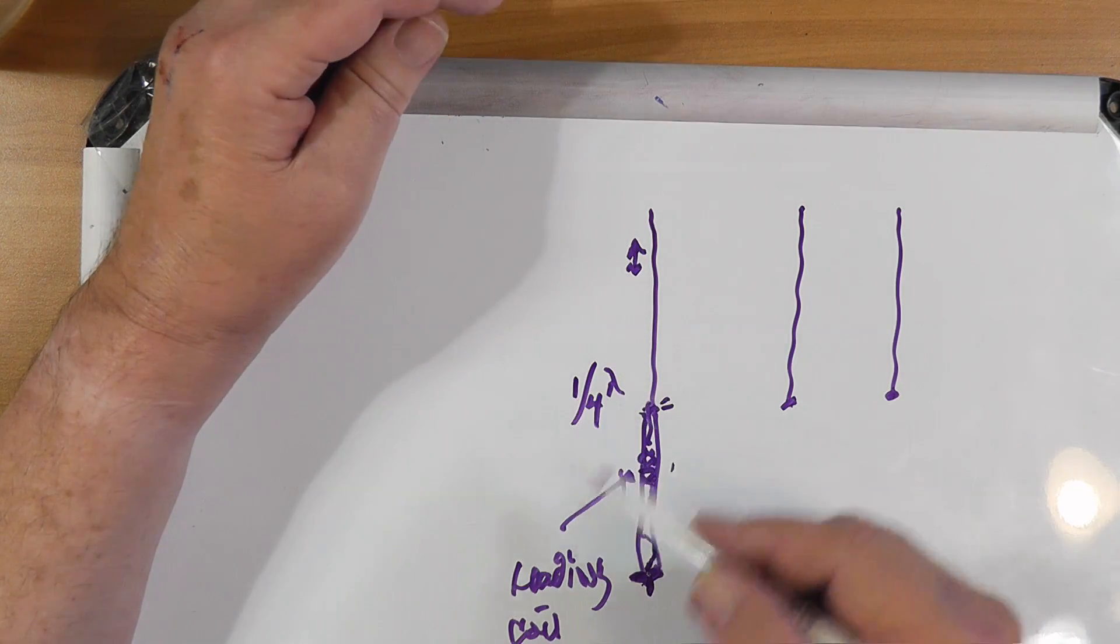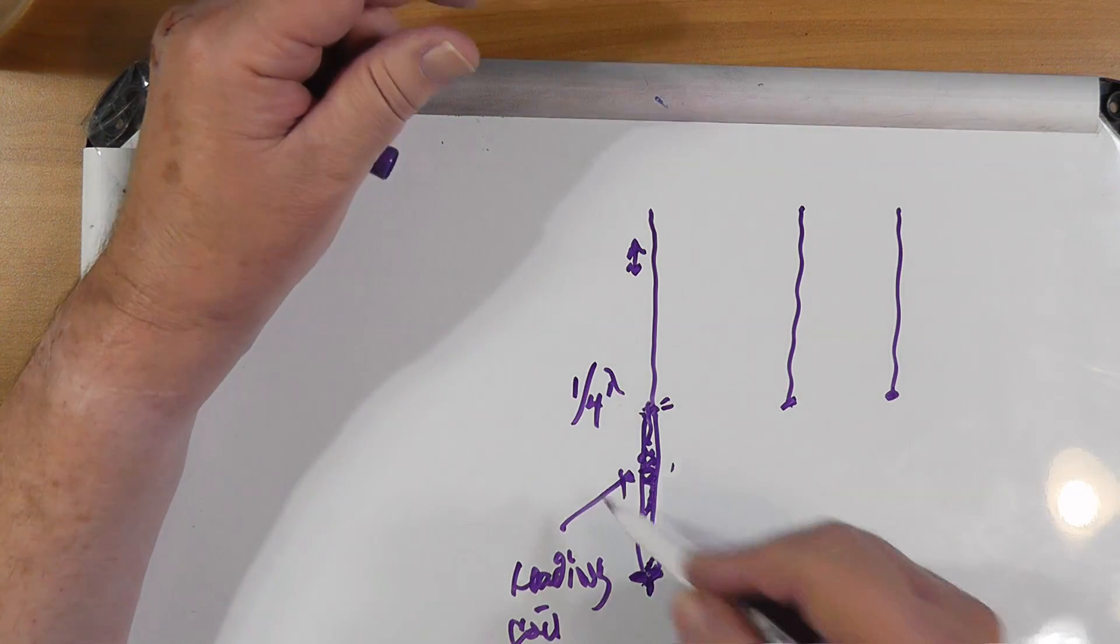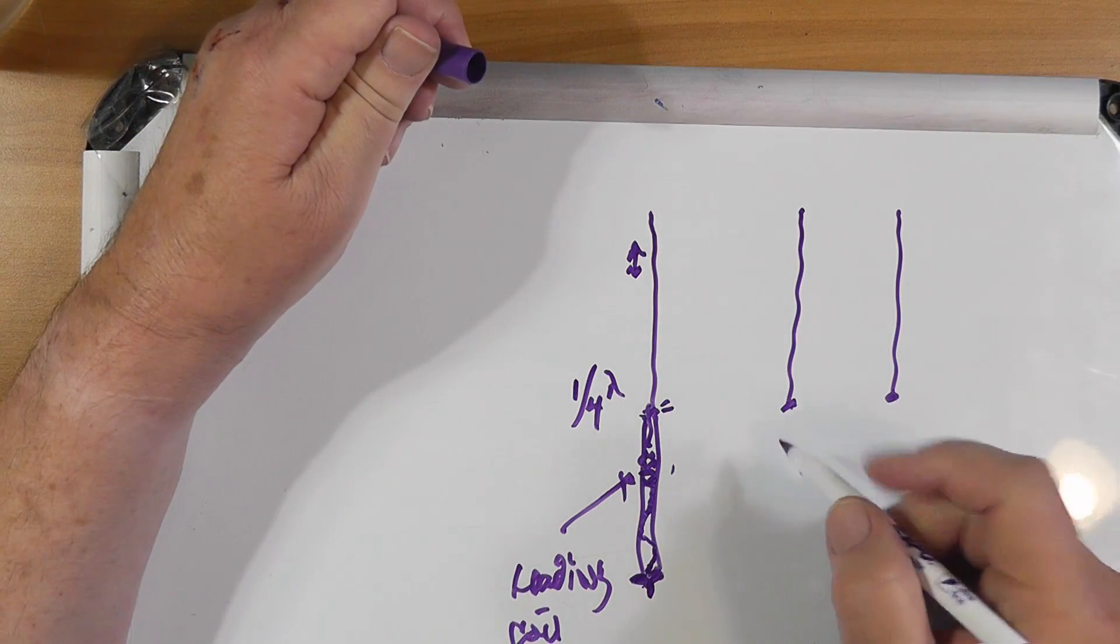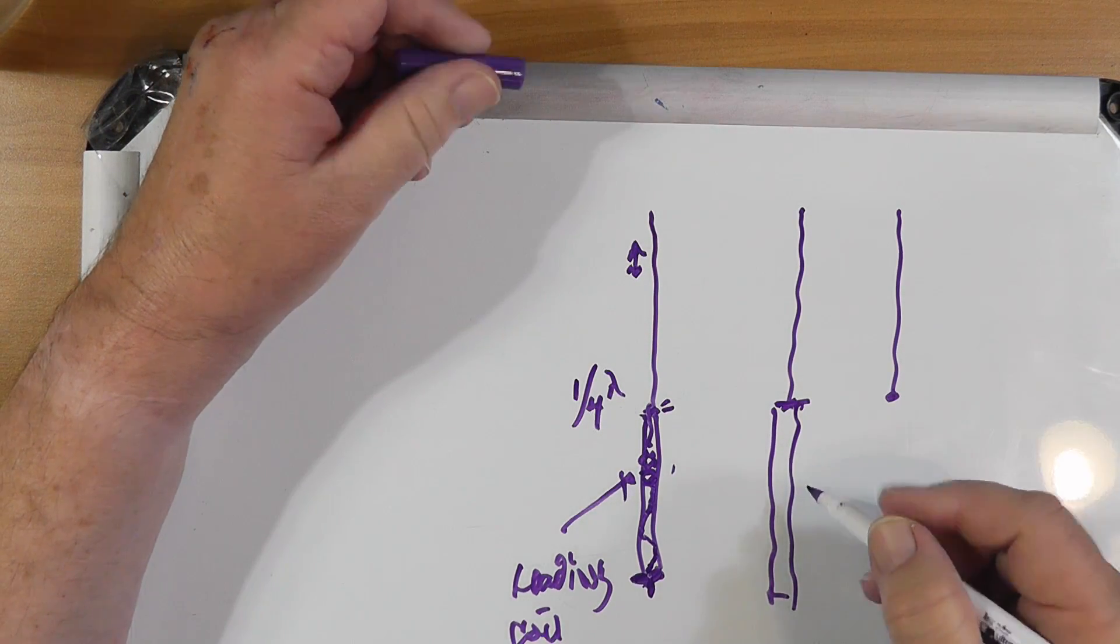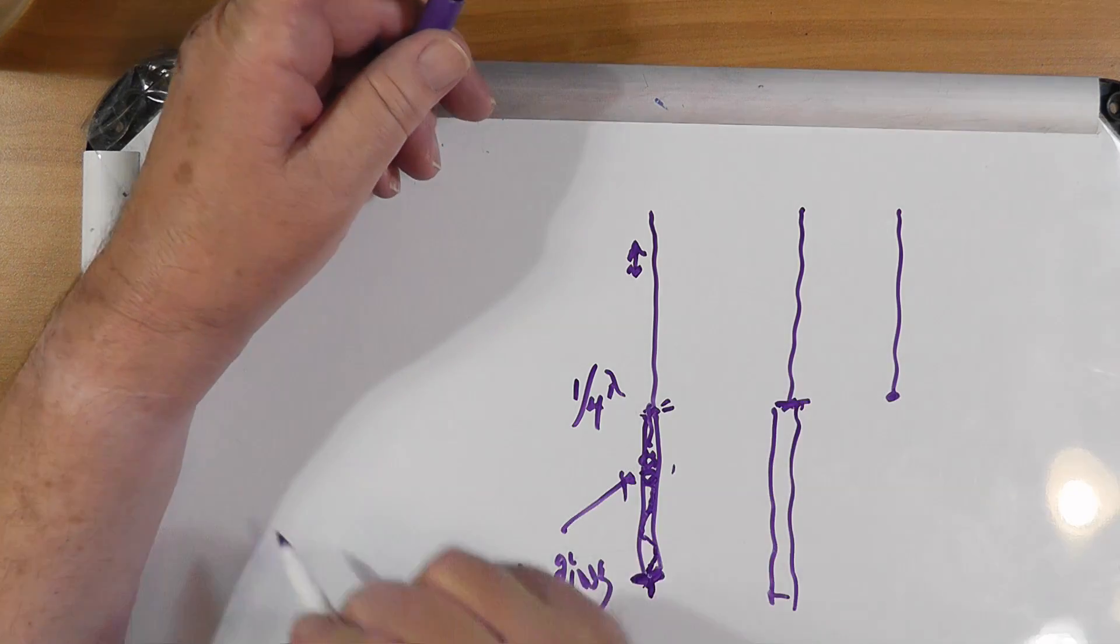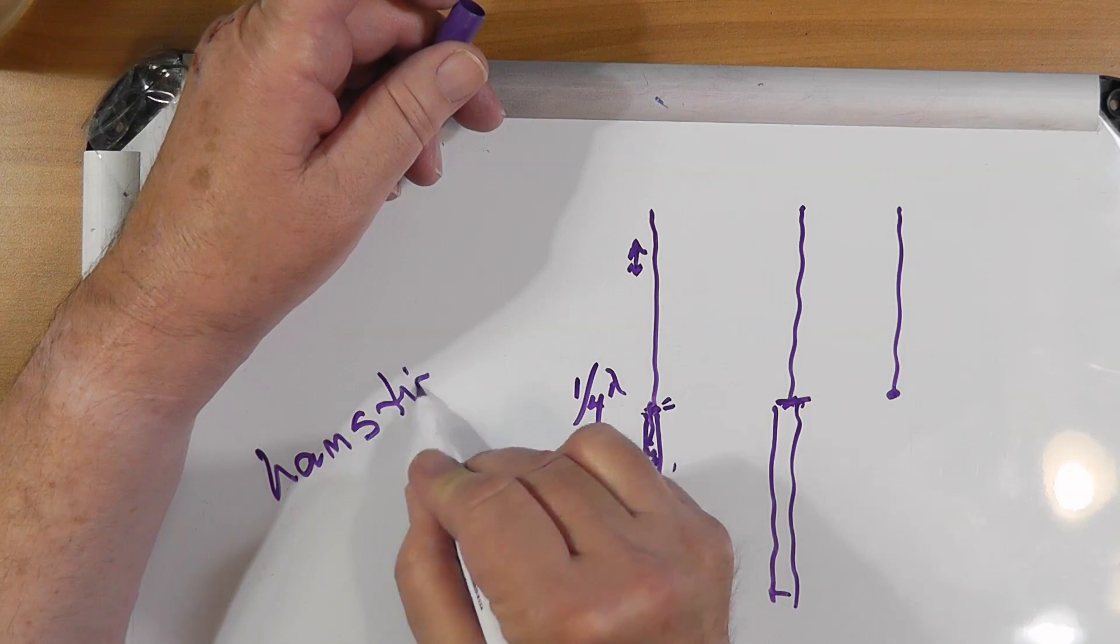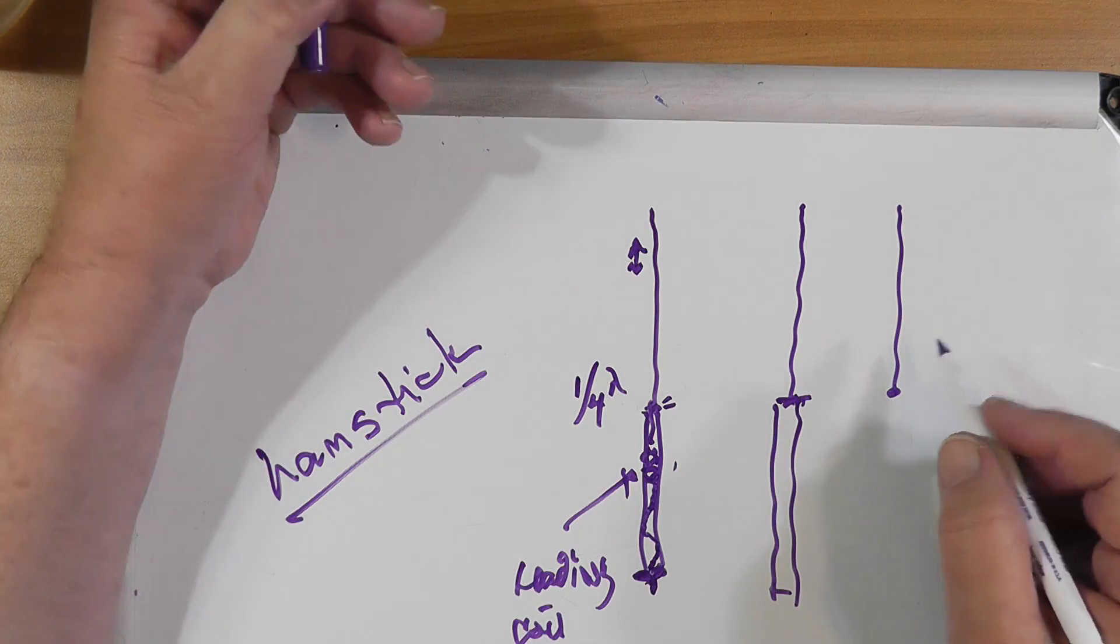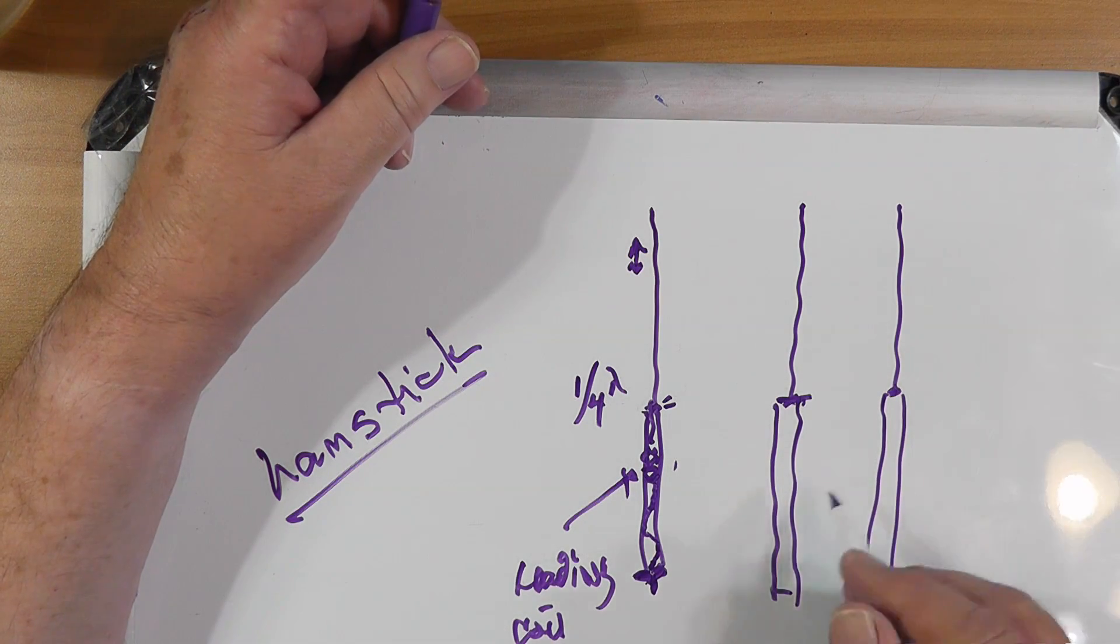So you tune it to whatever part of the band you want, leave it there. Now, that's a quarter wave antenna. You can get these hamsticks that are identical in size, made by a number of companies. There really is an organization that owns the name Hamstick, and I'm guessing MFJ has permission to use it or maybe it just resells their hamsticks.